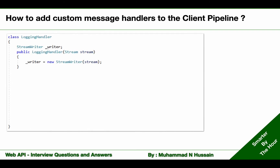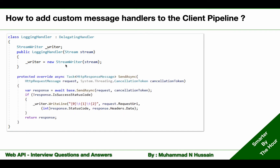To create a custom message handler, the first step is to create a simple class — I have created a logging handler class. Based on our requirement, we need a StreamWriter for logging purpose, so this class contains a StreamWriter. The second step is we need to derive that class from the DelegatingHandler class. The third step is we need to override the SendAsync method, and if you see the definition or implementation of that method, this is quite simple and straightforward.